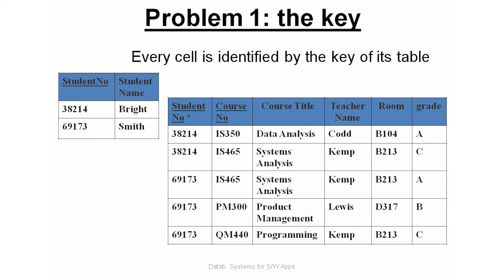Every cell is now identified by the key of each table. These two tables originated from the initial table, and in each of them, every value is identified by the key of that table. These tables are now in the first normal form.